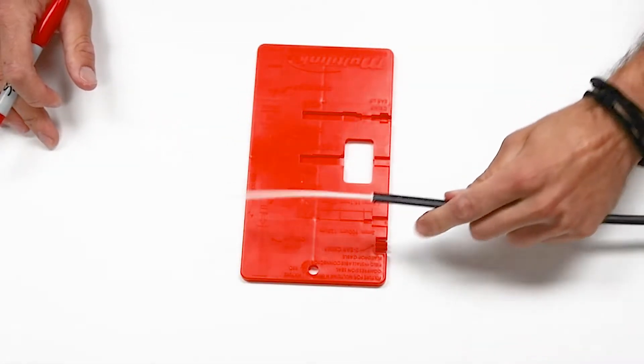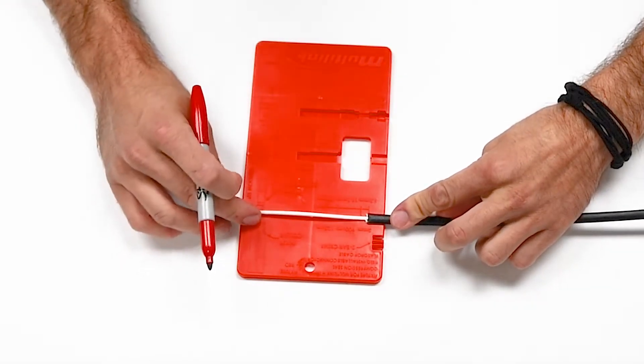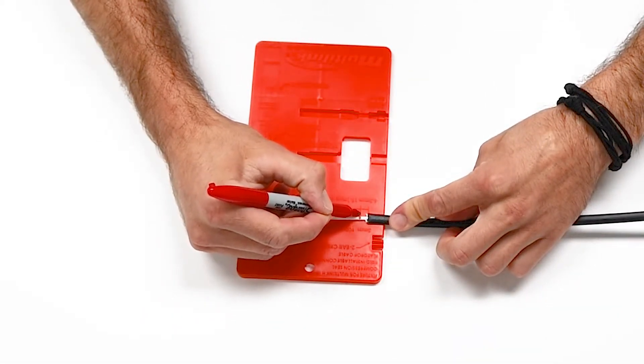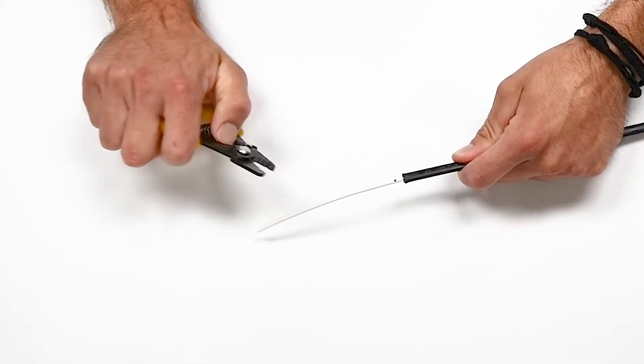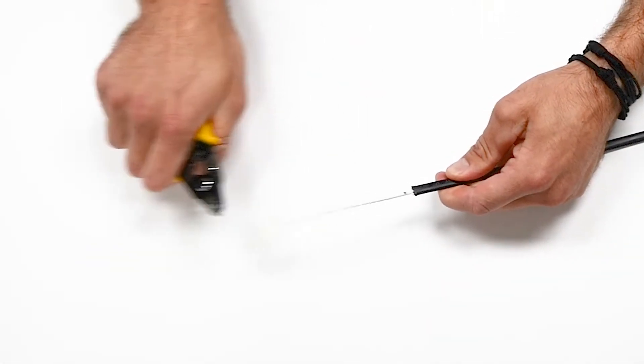So now we go to the template and what you want to do is you want to measure how much three millimeter buffer tubing you want to leave on the fiber. Once you have marked the buffer tube, you want to strip away all of the excess tubing.